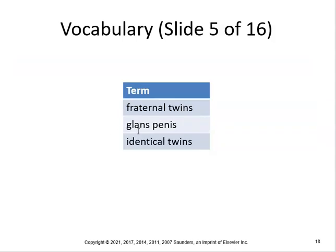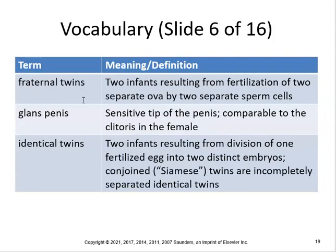Fraternal twins are two infants resulting from fertilization of two separate ova by two separate sperm cells — it's just like a brother and sister who happen to be born at the same time. Identical twins result from the division of one fertilized egg into two distinct embryos. Conjoined, or Siamese, twins are incompletely separated identical twins.